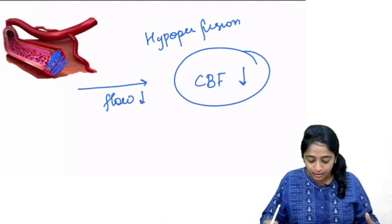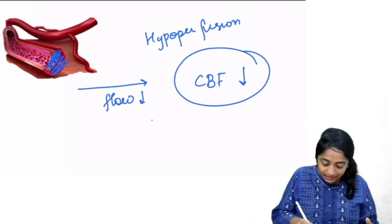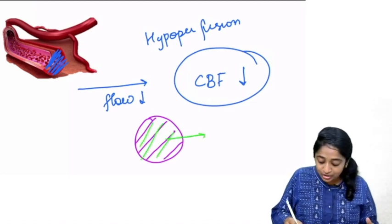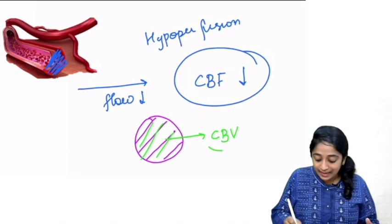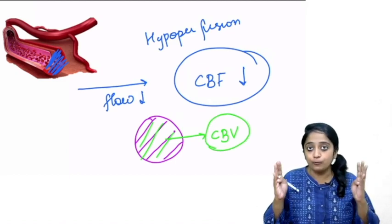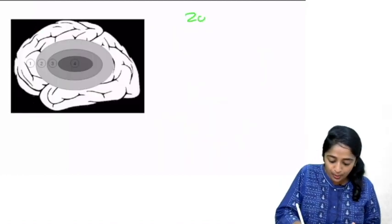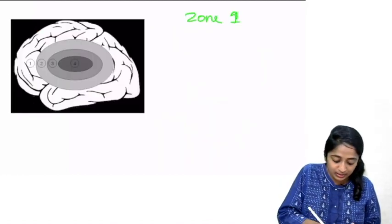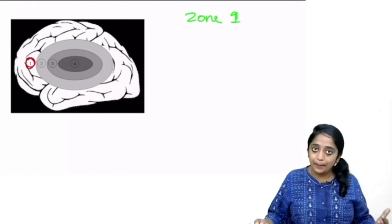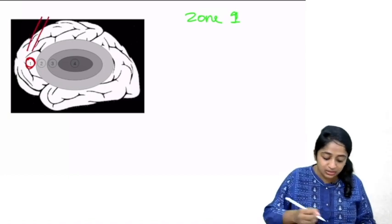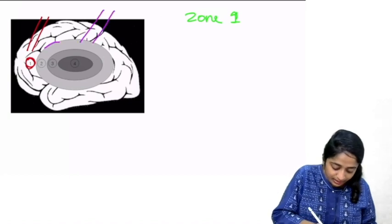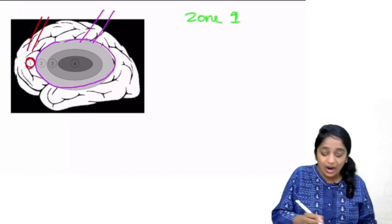Even within the hypoperfused region, there is varying extent to which each tissue is perfused. Hence we have the concept of the 4-compartment brain ischemia model. The amount of blood reaching a particular tissue — the cerebral blood volume (CBV) — will also be affected to varying extent. Depending on that, we have 4 zones. Zone 1, the area marked in white, is normal brain parenchyma because the blood supply to this area is not affected.